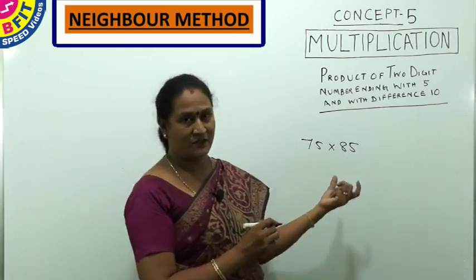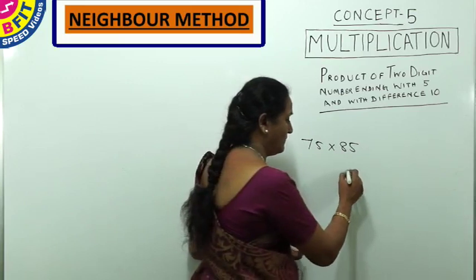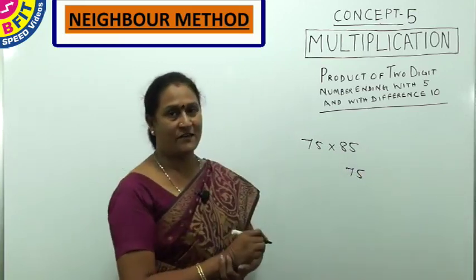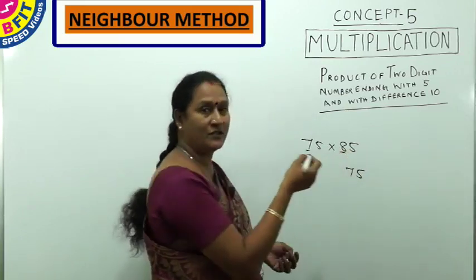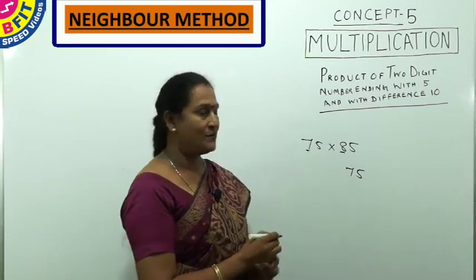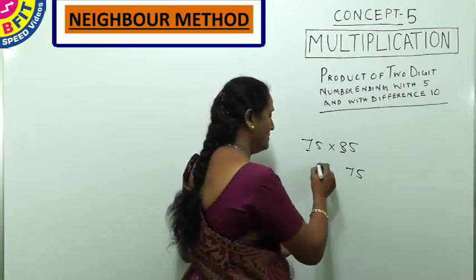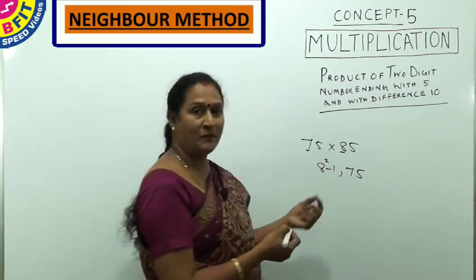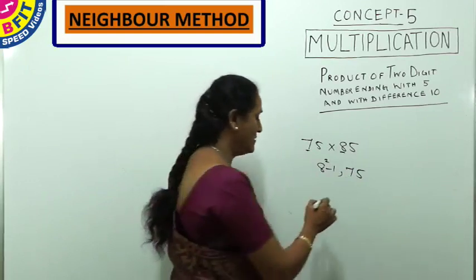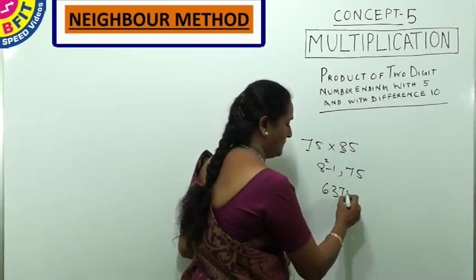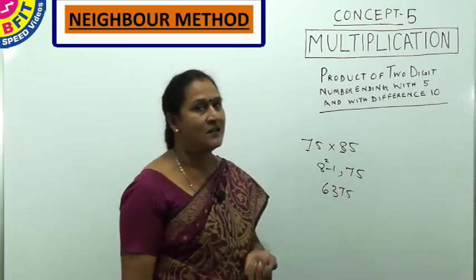Whenever both numbers end with 5 and the difference is 10, the last two digits will always be 75. For the remaining digits, look at the digits before the 5 and choose the higher number. In 7 and 8, the higher number is 8. Square it and subtract 1: 8² = 64, minus 1 = 63. So the product of 75 and 85 is 6375.